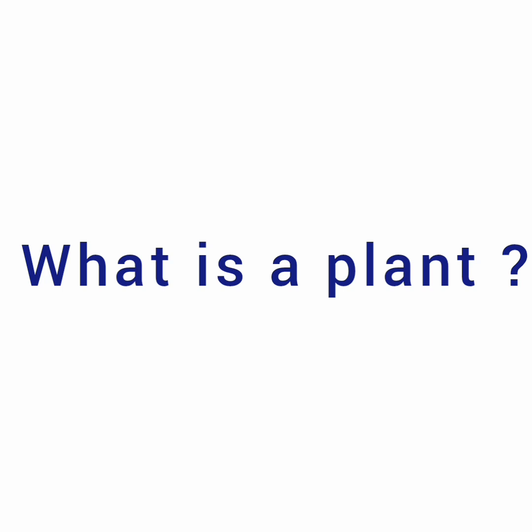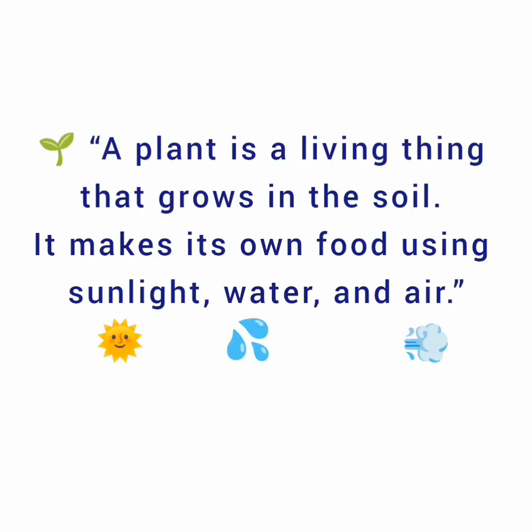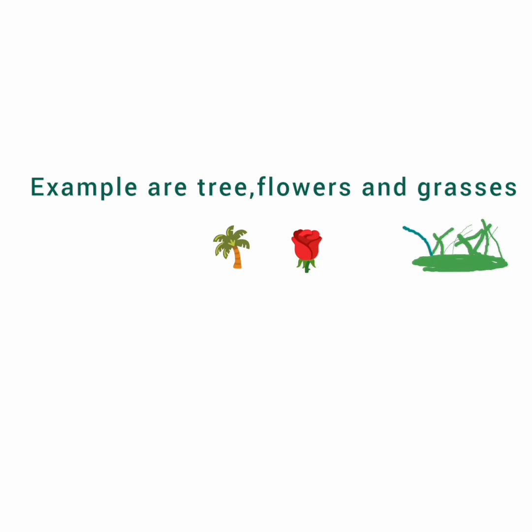What is a plant? A plant is a living thing that grows in the sun. It makes its own food using sunlight, water and air. Examples are trees, flowers and grasses.